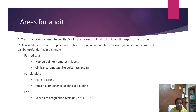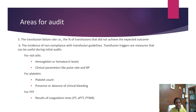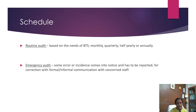Additional metrics include the transfusion failure rate — that is, the percentage of transfusions that did not achieve the expected outcome — and the incidence of non-compliance with transfusion guidelines. Transfusion triggers are useful measures during initial audits. For red cells we monitor hemoglobin or hematocrit levels and clinical parameters like pulse rate and BP; for platelets, the platelet count and presence or absence of clinical bleeding; for FFP, results of coagulation tests like prothrombin time, APTT, PT ratio and INR.